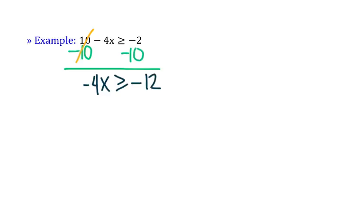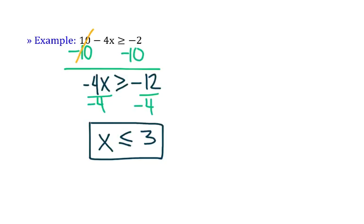So our inequality at this point says negative 4x is greater than or equal to negative 12. So we know we need to divide both sides by negative 4. But a moment ago we said if we multiply or divide by a negative number, that is what causes the direction of our inequality to switch. So my greater than or equal to symbol is now a less than or equal to symbol. And negative 12 divided by negative 4 is 3. So our solution here is x is less than or equal to 3.